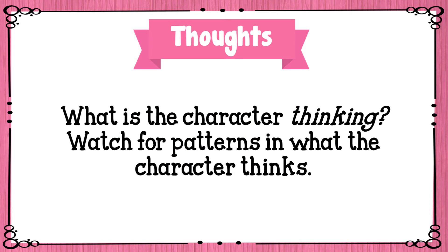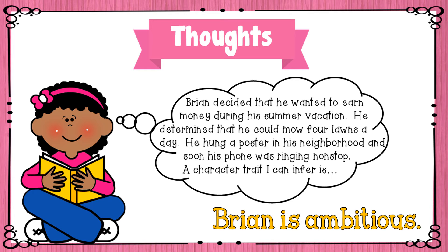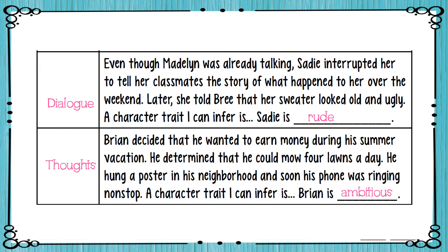The fourth way we can infer character traits is through thoughts — what is the character thinking? Watch for patterns in what the character thinks. Brian decided that he wanted to earn money during his summer vacation. He determined that he could mow four lawns a day. He hung a poster in his neighborhood and soon his phone was ringing non-stop. A character trait I can infer is that Brian is ambitious. On the fourth box, write thoughts — we inferred that Brian is ambitious from his thoughts on how to earn money.